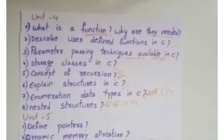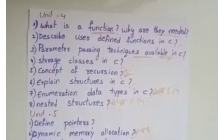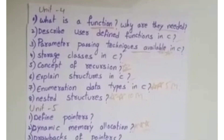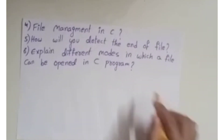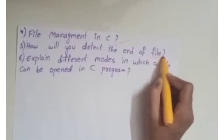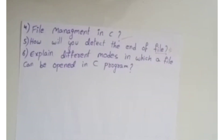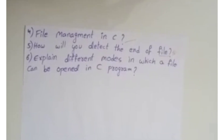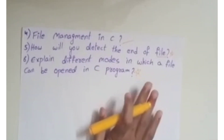Unit 5: Define Pointers — Pointers and their advantages. Dynamic Memory Allocation is a very, very important question. Drawbacks of Pointers. File Management in C — how to detect the end of a file is a question. Explain Different Modes in which a file can be opened in a C program. File Management in C is also important.